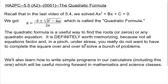This is Otter's Algebra 2 Precalculus. We're doing section 5.5, which is the quadratic formula. You'll recall that in the last video of 5.4, we solved the equation ax² + bx + c = 0 to get x equals negative b plus or minus the square root of b squared minus 4ac, all over 2a, which is called the quadratic formula.